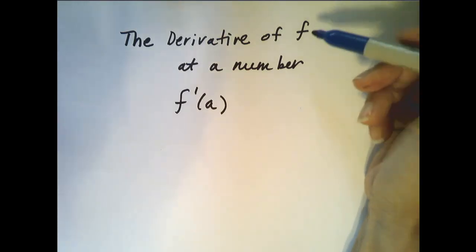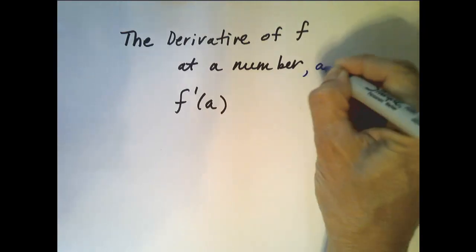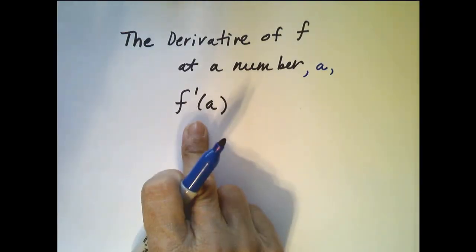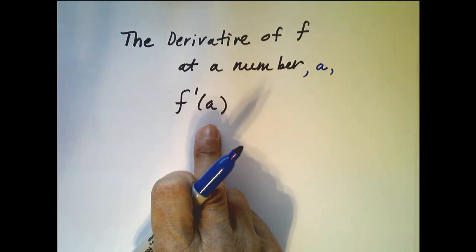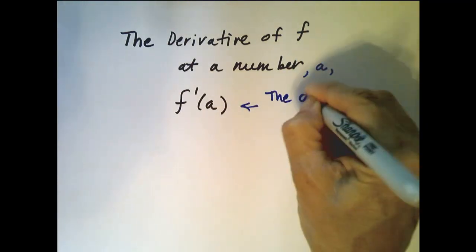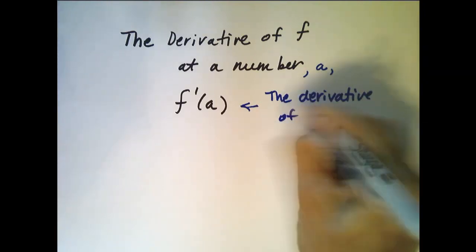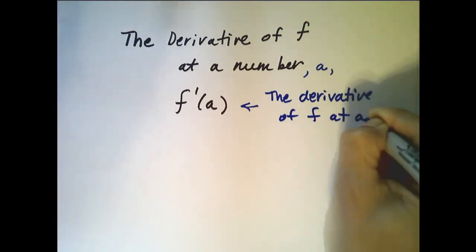Alright, we're ready to define the derivative of f at a number a, and we use this notation, f prime of a, to be the derivative of f at a.